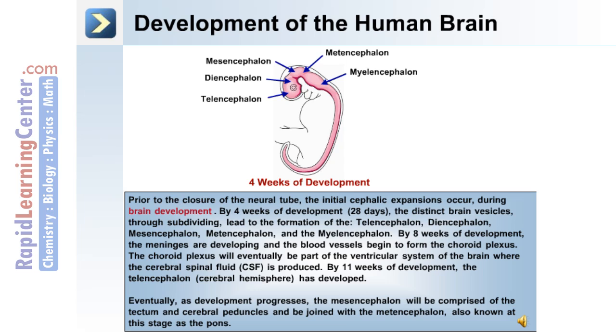By eight weeks of development, the meninges are developing and the blood vessels begin to form the choroid plexus. The choroid plexus will eventually be part of the ventricular system of the brain where the cerebral spinal fluid, or CSF, is produced.